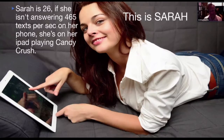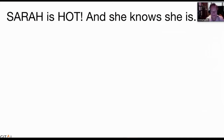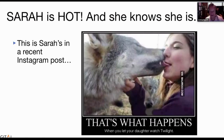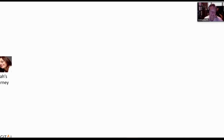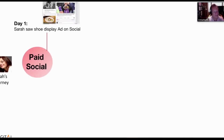So let's go on to a different scenario — this is Sarah, 26. If she isn't answering texts on her phone, she's playing a game on her iPad. Sarah goes on Instagram and Snapchat a lot — she's very active on social, but she has a very different customer journey. She saw a display ad on social, since that's where she's active. She doesn't really connect with programmatic display on other websites, so social was the trigger for her.